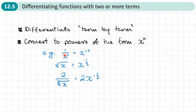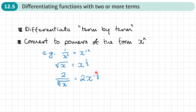For example, if I had 1 over x squared, write it as x to the power negative 2. If I had the square root of x, I'd write it as x to the power a half. And if I had something like 2 over the cube root of x, I'd write that as 2x to the power negative a third. We always want to write it in this form so that we can apply our rules for finding the derivatives term by term.